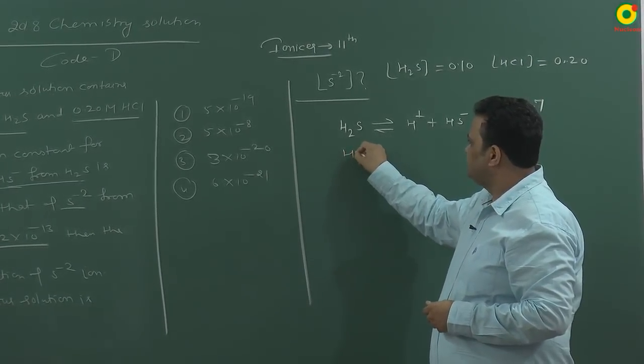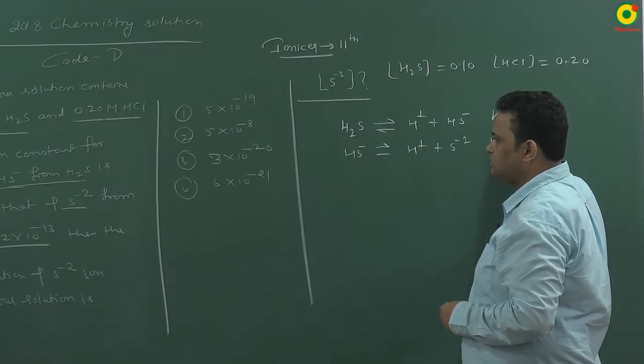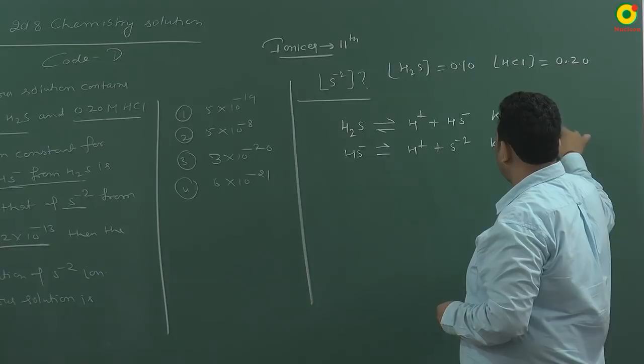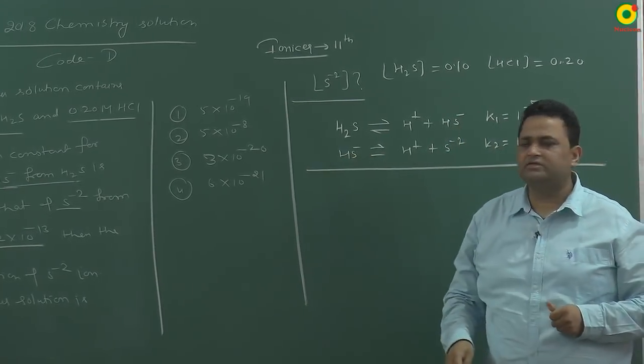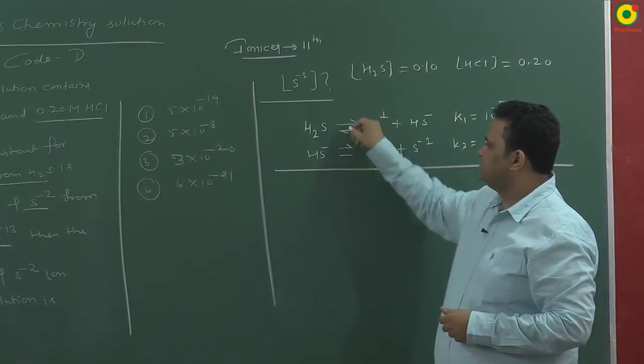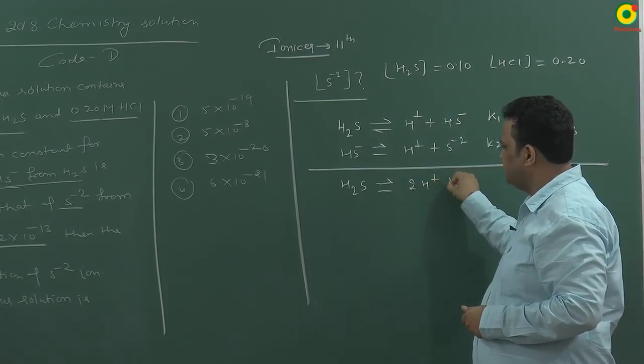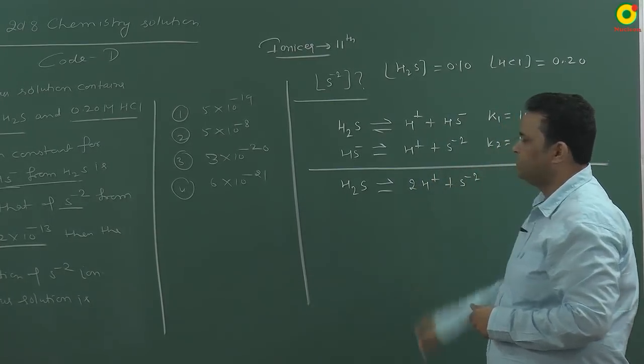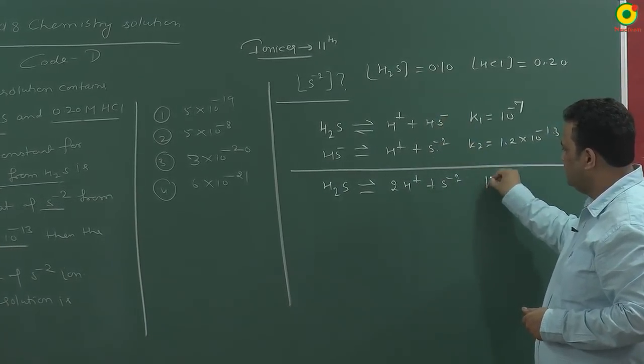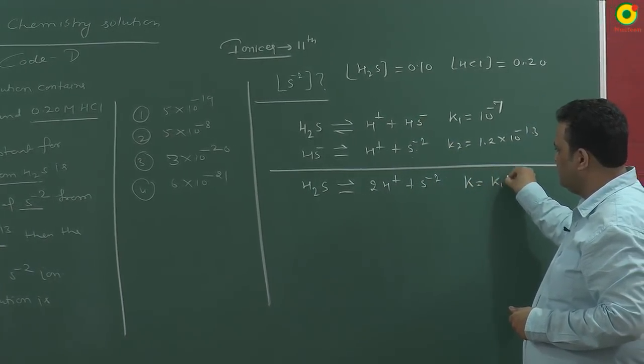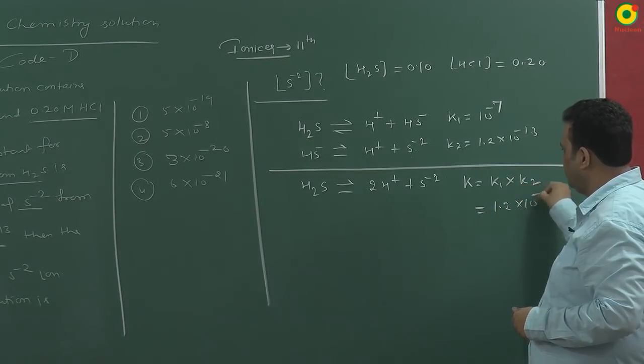Again, HS minus dissociates to give H plus plus S minus 2 ion and K2 is 1.2 into 10 to the power minus 30. If I add these two reactions then I will get H2S gives 2H plus plus S minus 2. According to chemical equilibrium, if two reactions are added then the equilibrium constant will be K1 into K2 multiplied, and it will be 1.2 into 10 to the power minus 30.